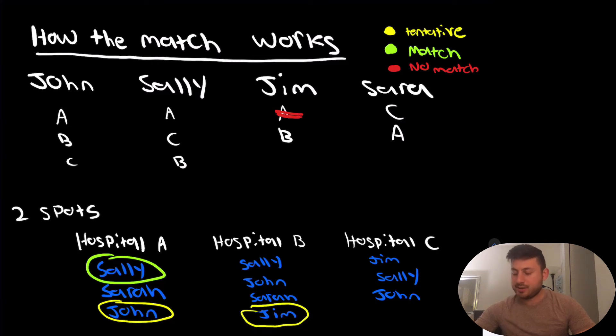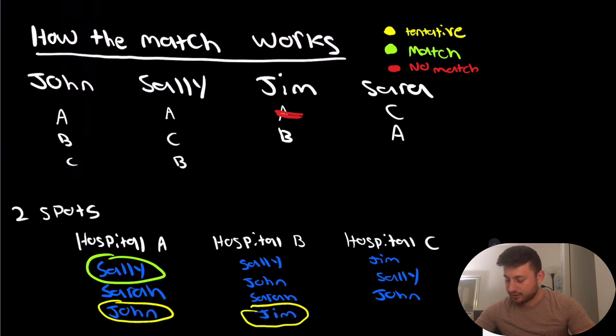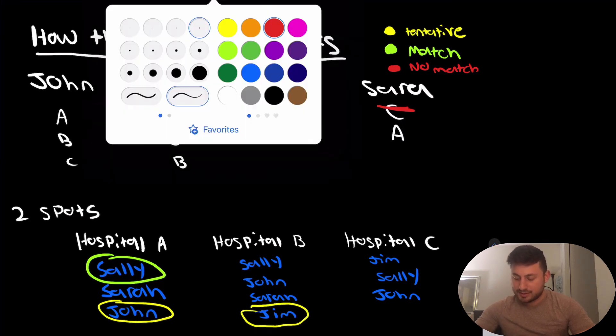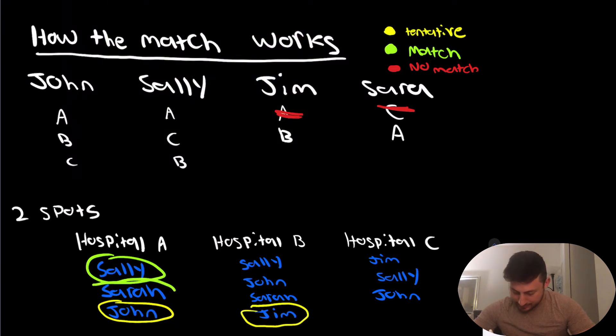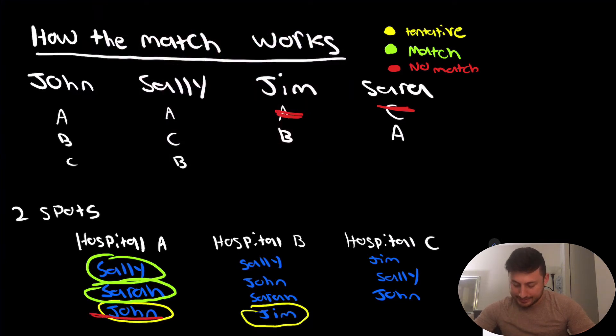Moving on to Sarah. Sarah ranked Hospital C first. And if you can see here, Sarah is actually not listed on Hospital C's rank list, so she's not going to match there. However, she listed Hospital A second, and she is listed on Hospital A's rank list. So because there's two spots available, and Sarah's ranked number two, and she has it on her rank list, she is going to match at Hospital A, which means that John is actually going to get kicked out of his match spot, and he's no longer tentatively matched there.